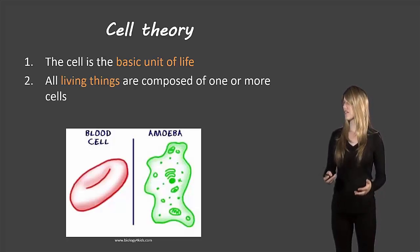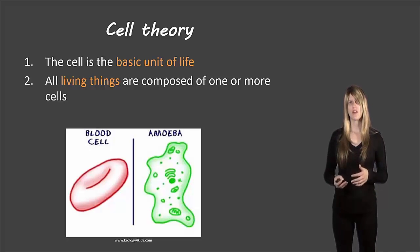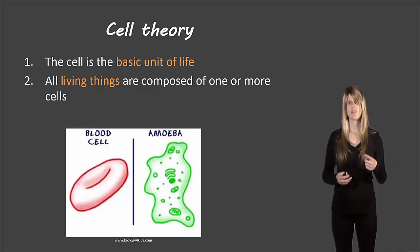All things are composed of one or more living cells. Some things are what we call unicellular and they're able to survive just as a single cell like many bacteria. Other things are called multicellular like people where we're made up of very many different cells.